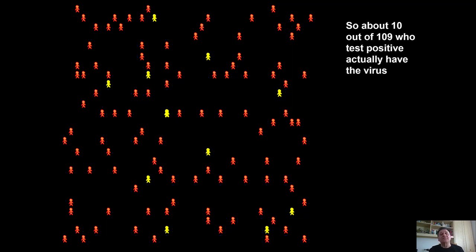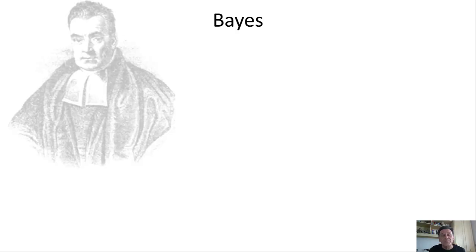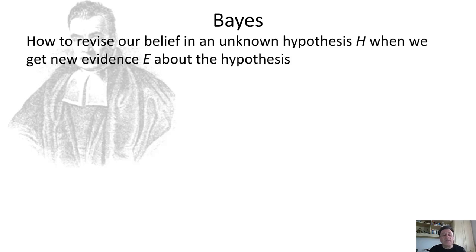When we look at the combined set of people who test positive, there are 109, but only 10 of them actually have the virus. That's just over 9%. So the probability that a person has the virus if they test positive is just over 9% — very different from the 90% assumed by most people.